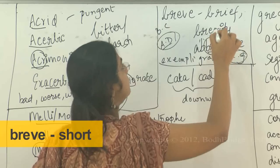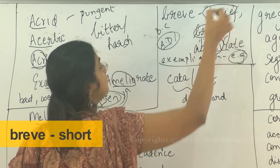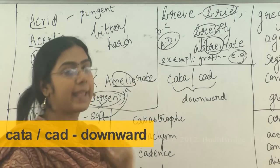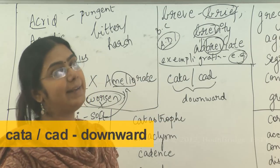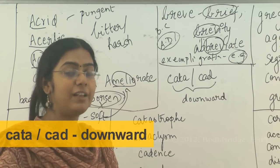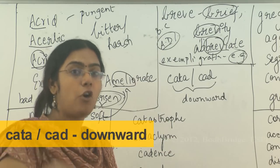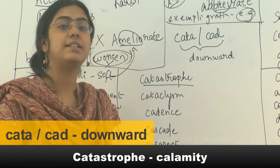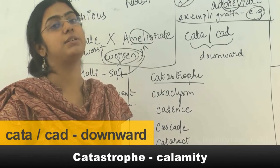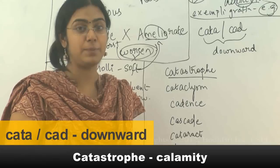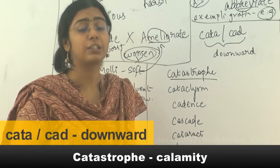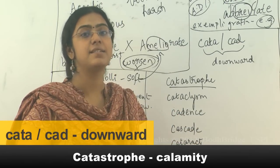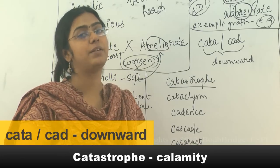The next set of words has root words CATA and CAD, which generally mean downward descent — to fall down. Catastrophe is a downfall, typically of a natural nature: a tsunami, a volcanic eruption, an earthquake. These are catastrophes — a downward upheaval of a natural cause.